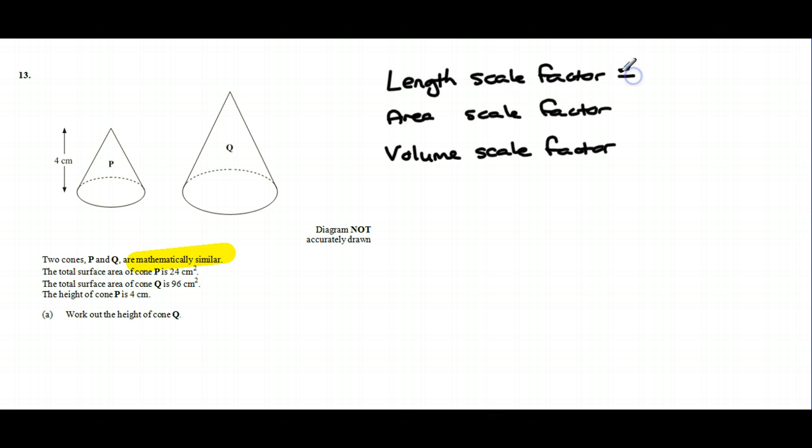So if we can work out how many times longer the length is, let's call it k, then the area will actually be k squared times bigger and the volume will be k cubed times bigger. The length scale factor is just the power 1, the area scale factor is the power 2, and the volume scale factor is the power 3.